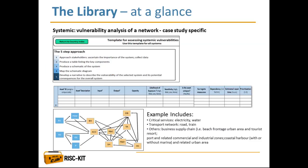The library also proposes a methodology to assess the systemic vulnerability of networks. This vulnerability cannot be generic and is case-study specific. A five-step approach is proposed in the library. First, you have to approach stakeholders to understand the system and collect data. This data should be used to produce a table listing the key components of a network, their capacity, their potential exposures, their sensitivity, and information about the role of the asset within the network, such as its uniqueness, whether surrogate measures could be used, whether there is a dependency, and how important the assets are for the whole system.